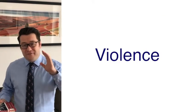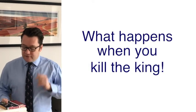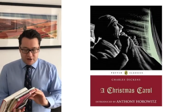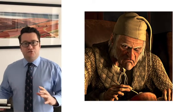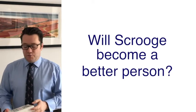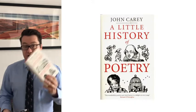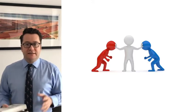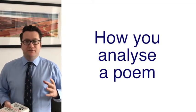Macbeth is fantastic — it's all about violence and ambition and what happens when you kill the king. Then you'll study a novel: A Christmas Carol by Charles Dickens. The question of the whole novel is whether Scrooge will become a better person. The fourth section of your literature course is poetry, which has two parts: a selection of 15 poems studied in depth, looking at conflict, war and battles, and a second part on how you analyse a poem you see for the first time.